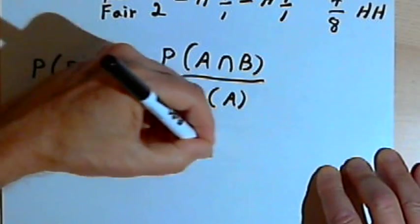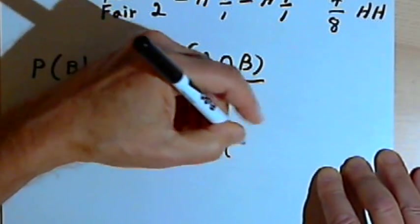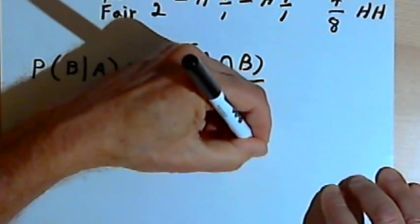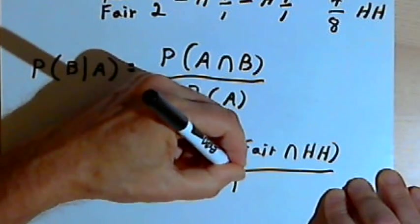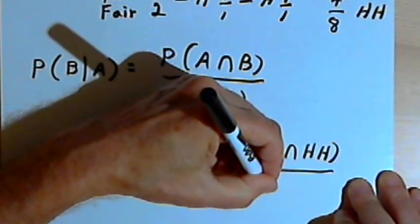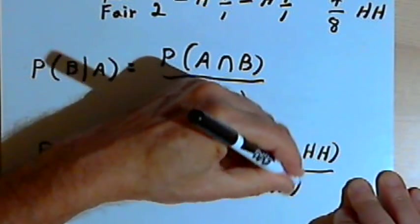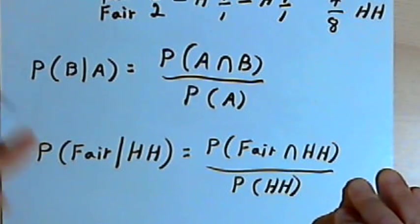So that's going to equal the probability that I have a fair coin and it came up heads two times in a row, divided by the probability of getting heads two times in a row.